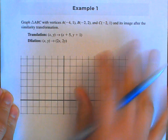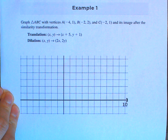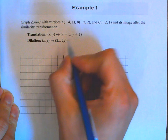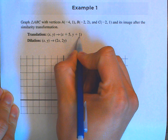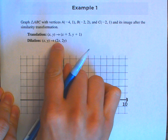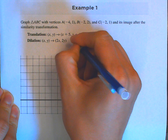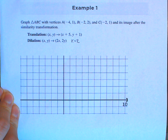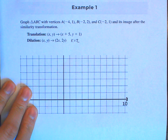In example number one, they want me to graph three vertices creating a triangle and its image after a similarity transformation. What they want me to do is translate it five units to the right and one unit up, and after we do that, perform a dilation with a scale factor of two.